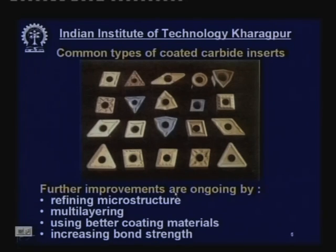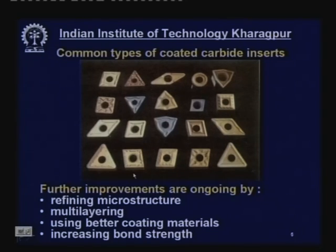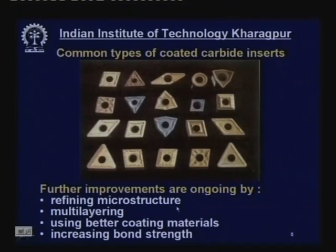Further improvements on coated cutting tools are ongoing — by refining the microstructure of the coating and substrate, multi-layering using up to 13 layers of different materials within 15 to 17 microns to derive the benefits of all materials, using better and more heat-resistive coating materials, and increasing bond strength through improvements in CVD or PVD process.